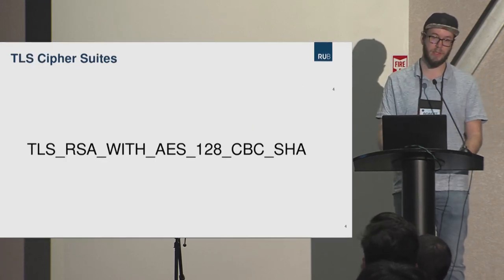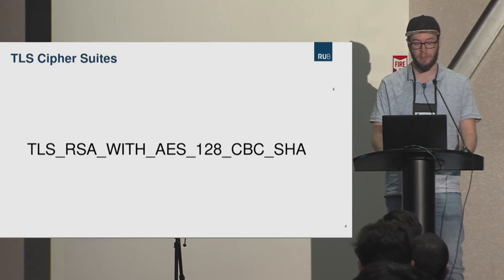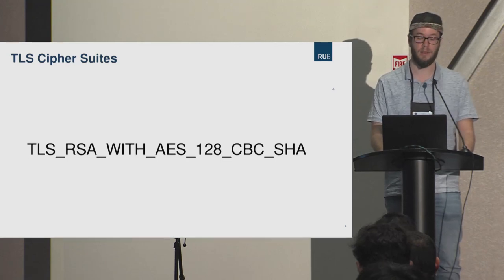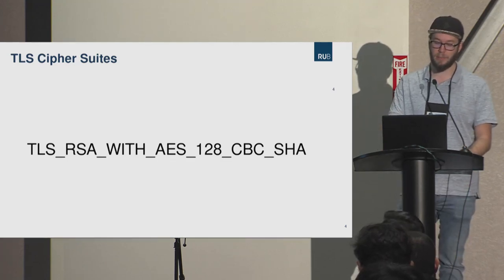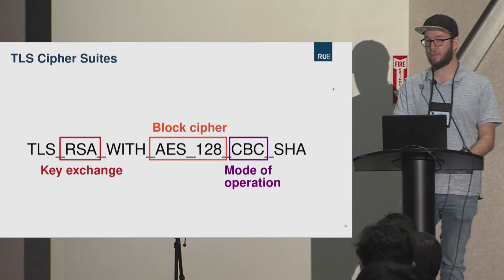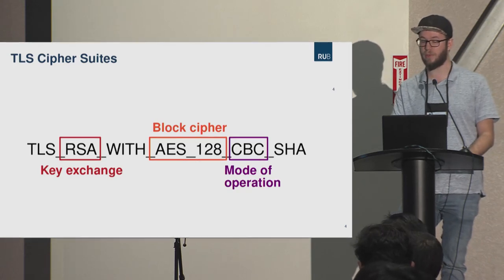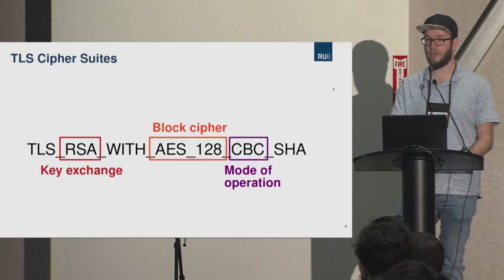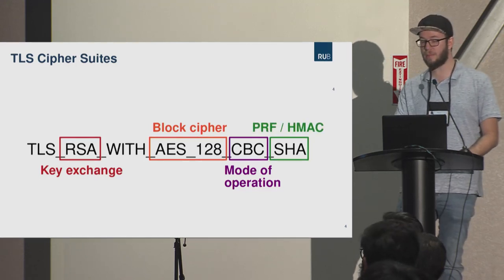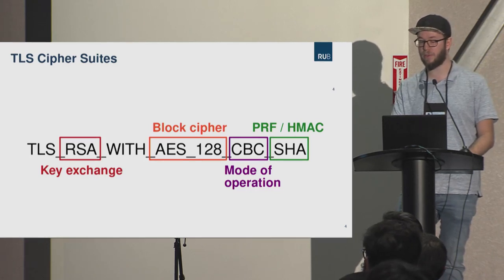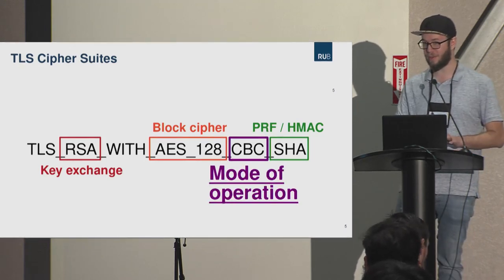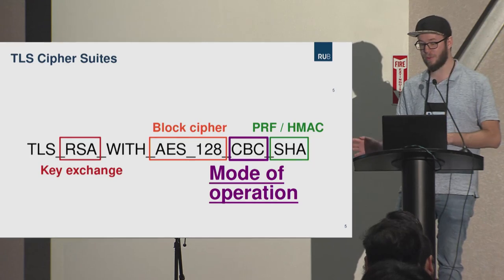TLS uses the concept of a CipherSuite — a set of cryptographic algorithms negotiated in a TLS session. As an example, we might choose RSA as a key exchange algorithm, AES as a block cipher in CBC mode of operation, and SHA1 as an HMAC and in the pseudorandom function. This talk is mainly about CBC padding oracles, so we focus on all CipherSuites which use CBC. If you negotiate a CipherSuite that is not CBC, you are not vulnerable — but if you do, you might be.